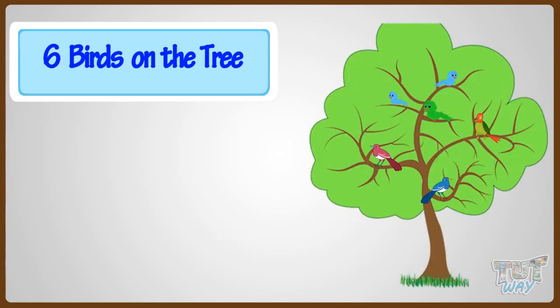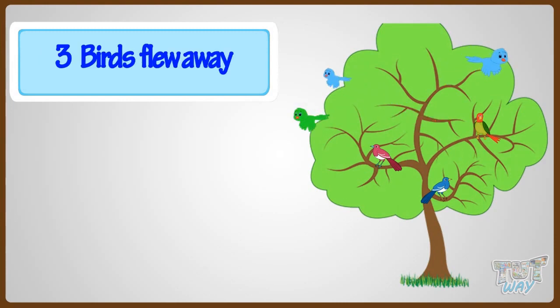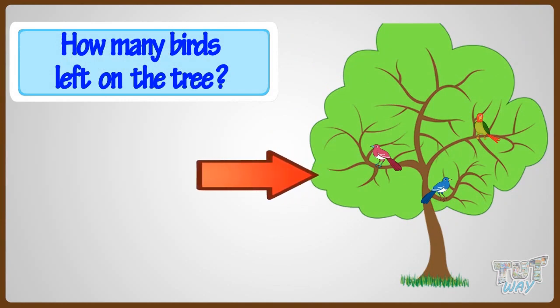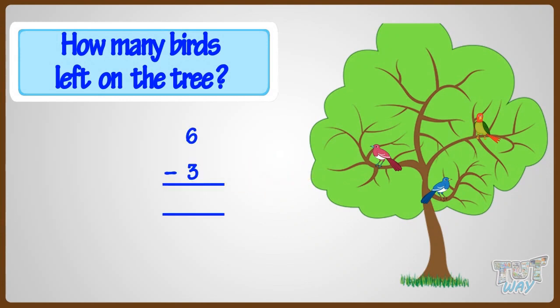Now let's take another example. There are six birds on the tree. Three birds flew away. How many birds are left on the tree? First, write it like this, with the bigger number first.